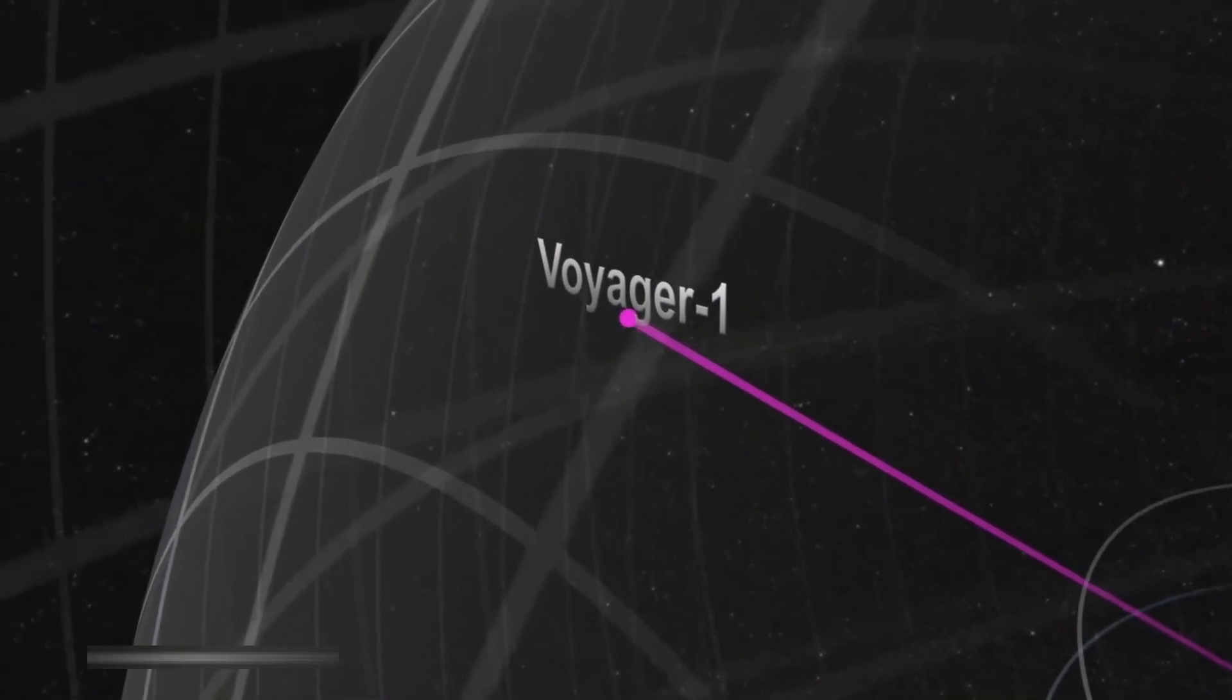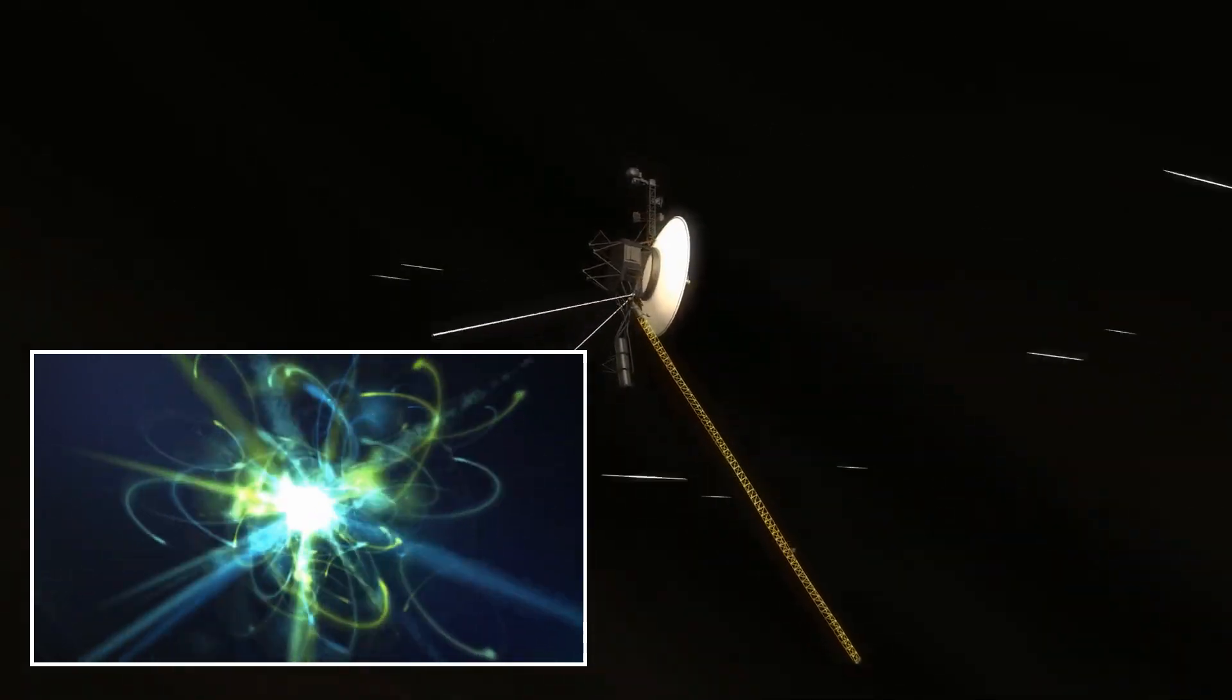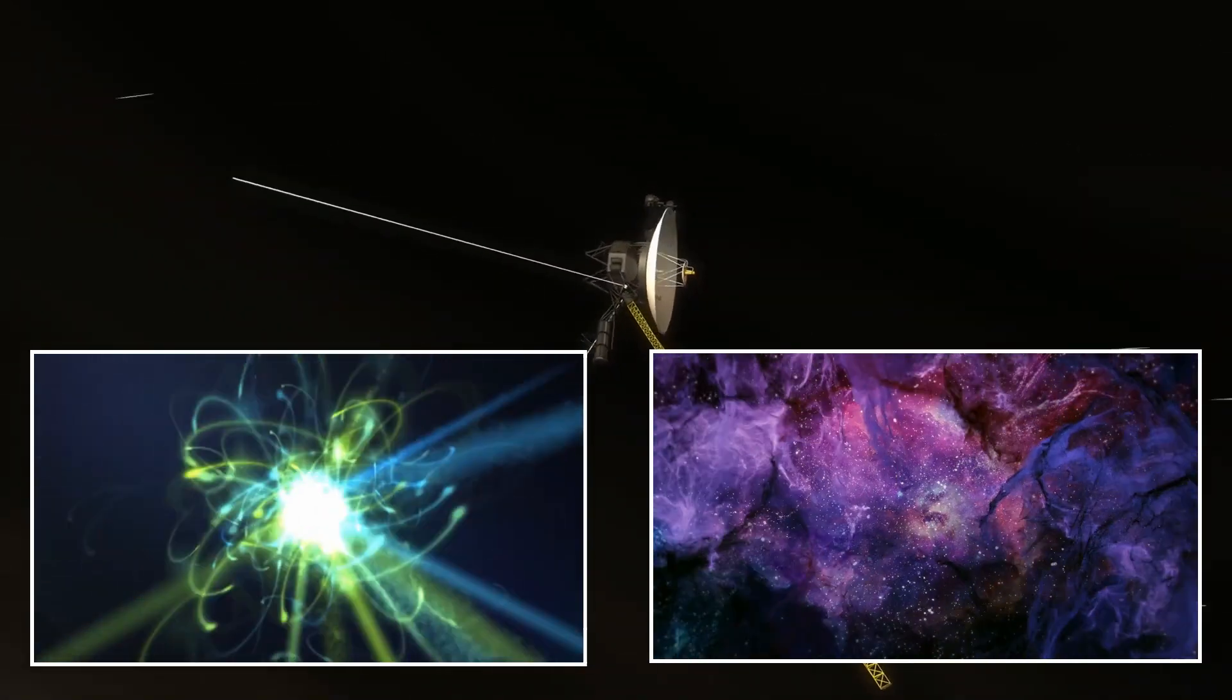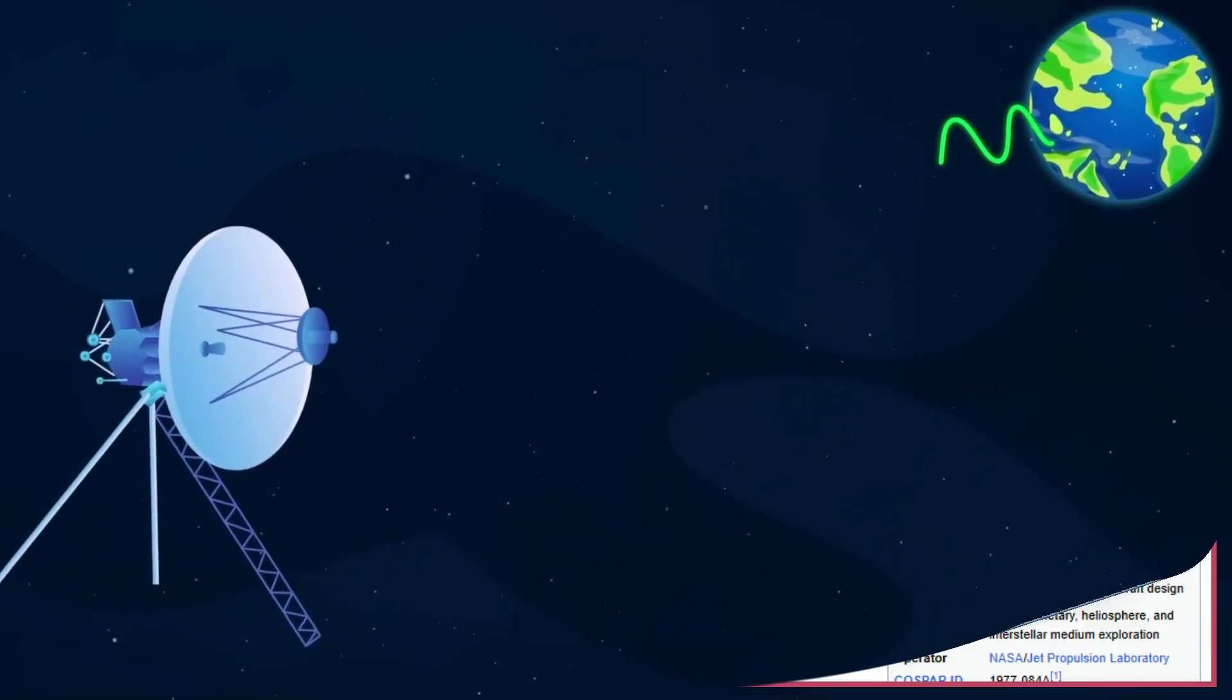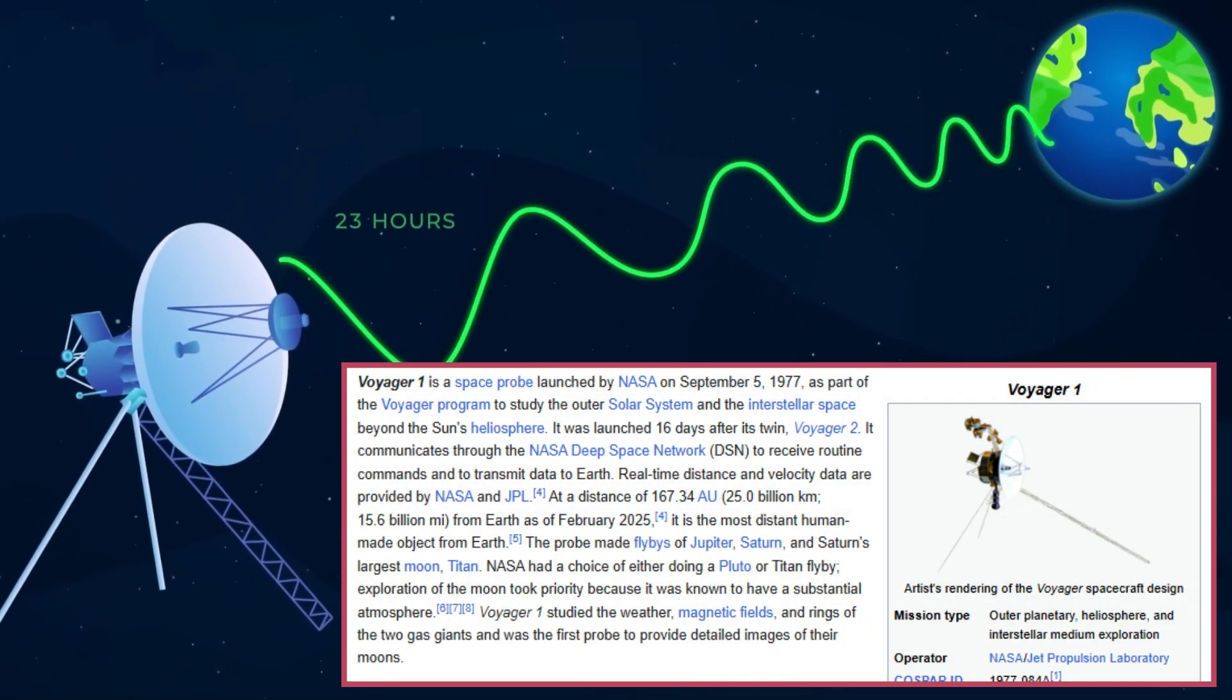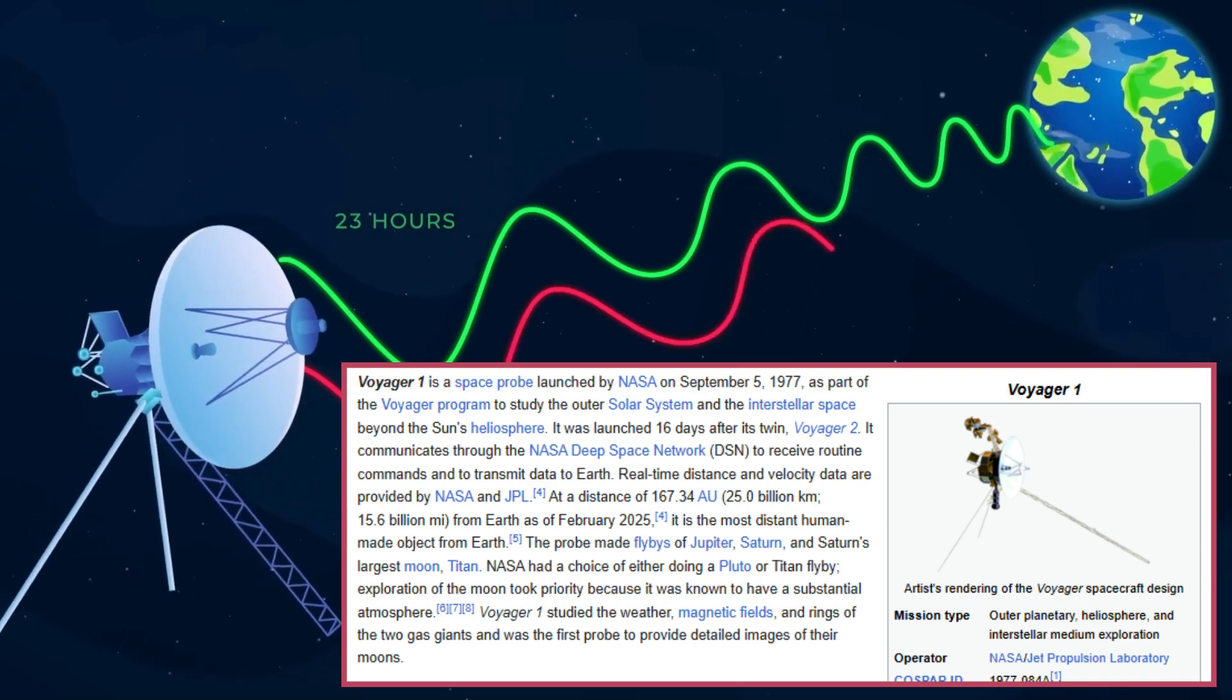This discovery challenges everything we know about physics. If Voyager 1 somehow picked up a neutrino-based signal, it could mean an entirely new force of nature, an unknown cosmic event, or even a deliberate message from deep space. But how could a 47-year-old probe, drifting 15 billion miles from Earth, detect something that should be impossible?